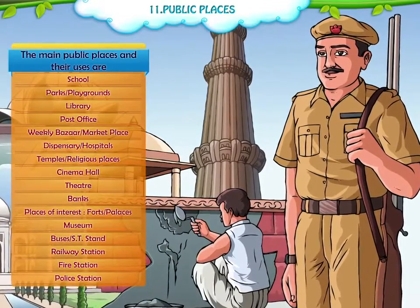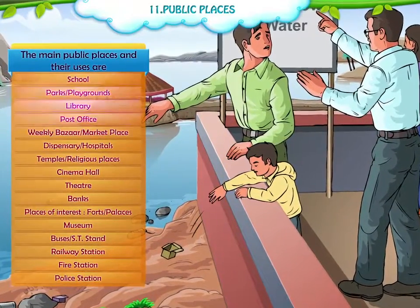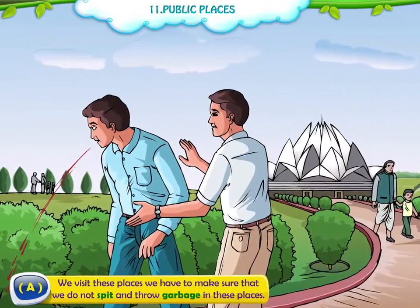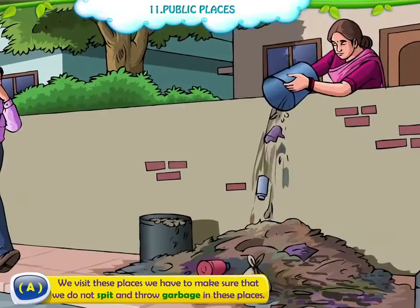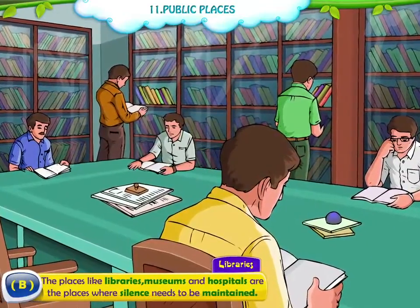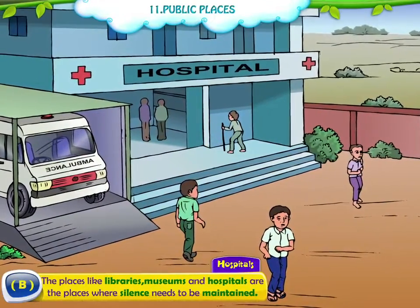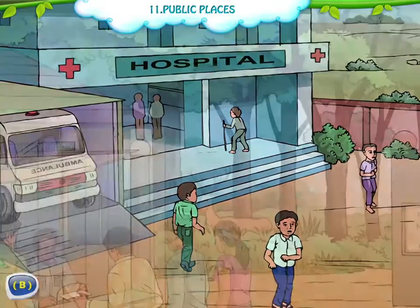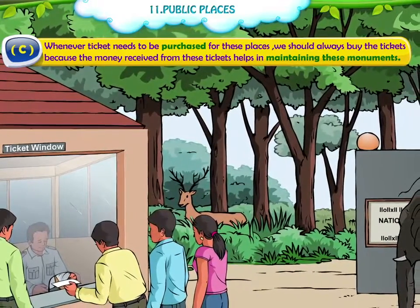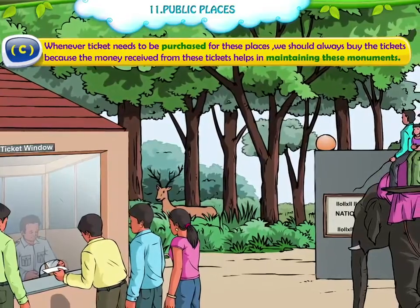These public places are meant for our convenience and enjoyment. It is our prior responsibility to take care of these places. Whenever we visit these places, we must make sure that we do not spit or throw garbage there. Places like libraries, museums and hospitals are places where silence needs to be maintained. Whenever tickets need to be purchased, we should always buy them, as the money received from tickets helps in maintaining these monuments.